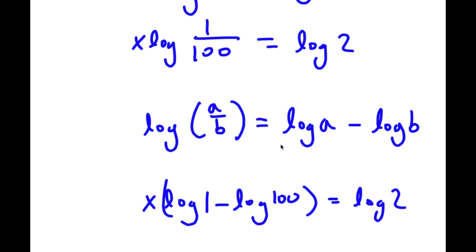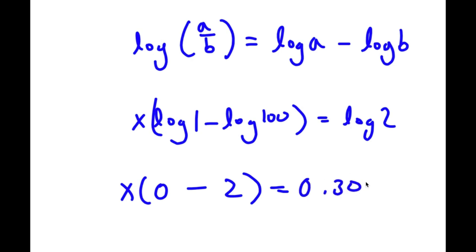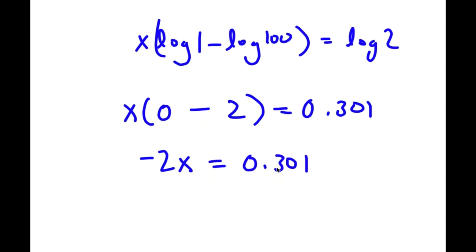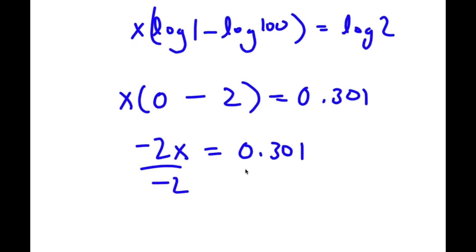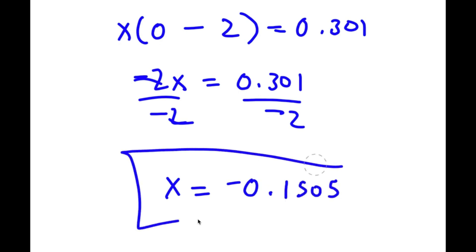Now log 1 is simply equal to 0, and log 100 is simply equal to 2. So I have x times 0 minus 2 is equal to log 2, which is approximately 0.301. Now, 0 minus 2 is negative 2. So I have negative 2 times x is equal to 0.301. And now I'm going to divide both sides by negative 2. These two cancel out, and I'm left with x is equal to 0.301 over negative 2, which is equal to negative 0.1505. So this is my answer.